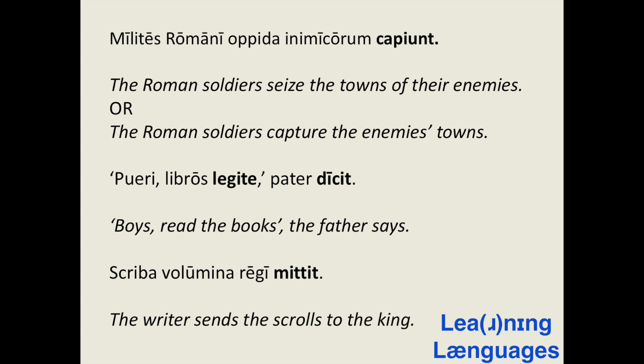For the third sentence we have: scriba volumina regi mittit — the writer sends the scrolls to the king. Here the writer, scriba, is the subject, so in the nominative singular. Volumina is the direct object — that is what's being sent — and is an example of a third declension plural neuter. And regi, meaning 'to the king,' is the dative of rex, which is another third declension noun.